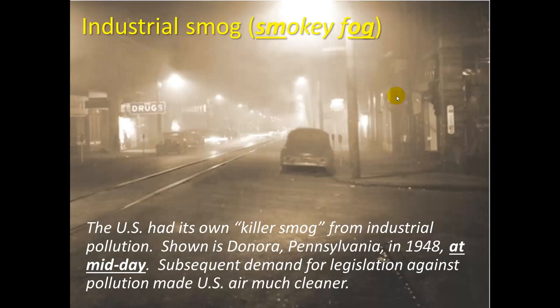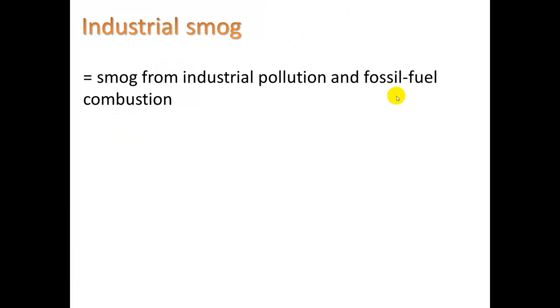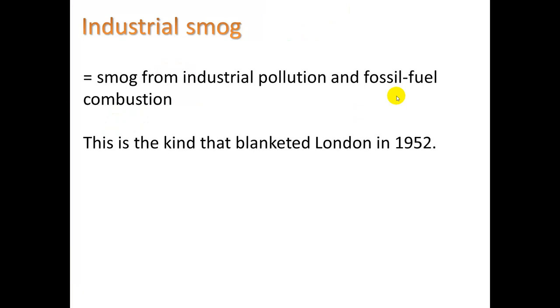Now let's look at industrial smog and photochemical smog. Smog is a combination of the words smoky and fog. The U.S. had its own killer smog from industrial pollution — this is a photo from Pennsylvania in 1948 at midday. Subsequent demand for legislation against pollution made U.S. air much cleaner. Industrial smog comes from industrial pollution and fossil fuel combustion, mostly for generating electricity. This is the kind that blanketed London in 1952, also called gray air smog.